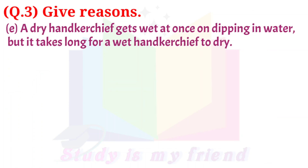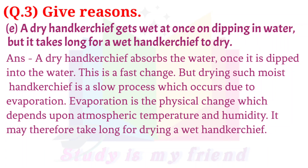E. A dry handkerchief gets wet at once on dipping in water, but it takes long for a wet handkerchief to dry. Answer: A dry handkerchief absorbs water once it is dipped — this is a fast change. But drying such a moist handkerchief is a slow process which occurs due to evaporation. Evaporation is a physical change which depends upon atmospheric temperature and humidity, and it may therefore take long to dry a wet handkerchief.